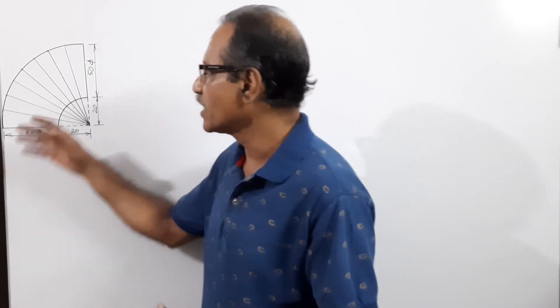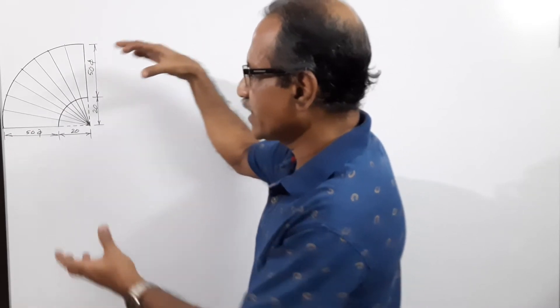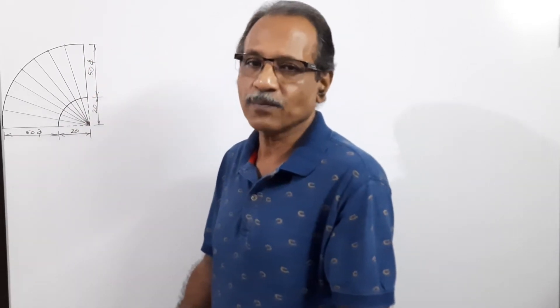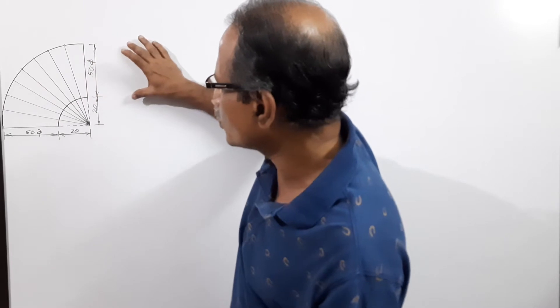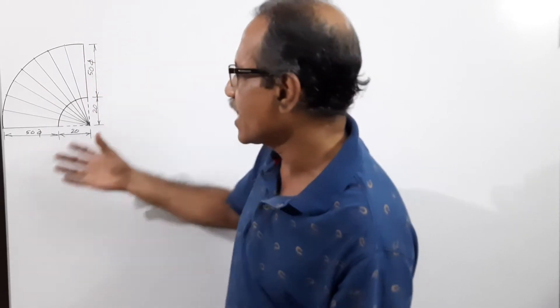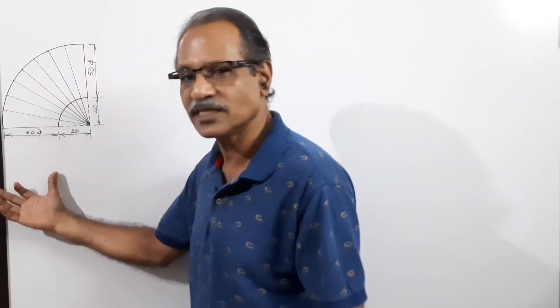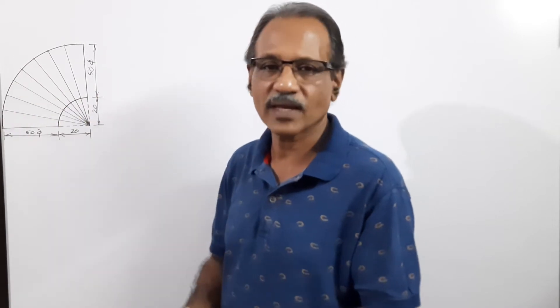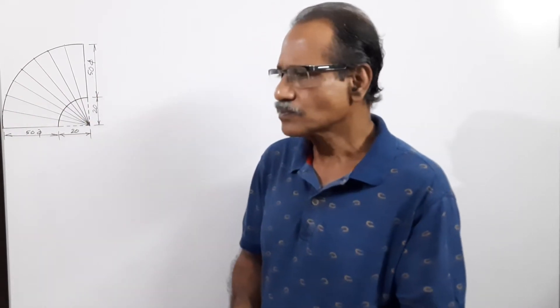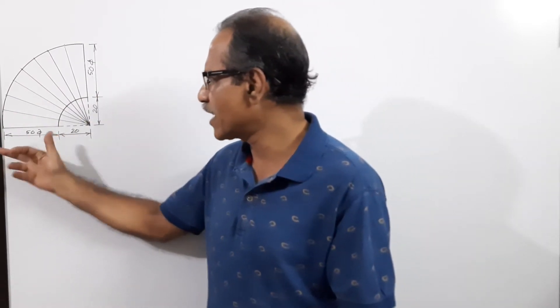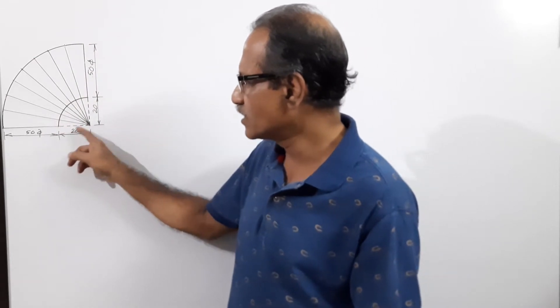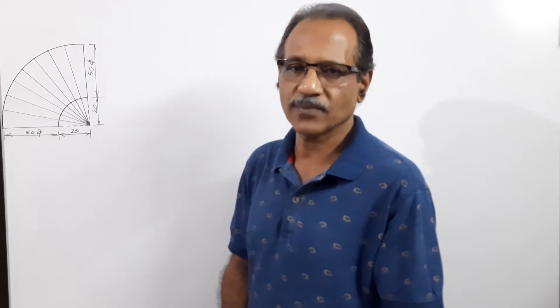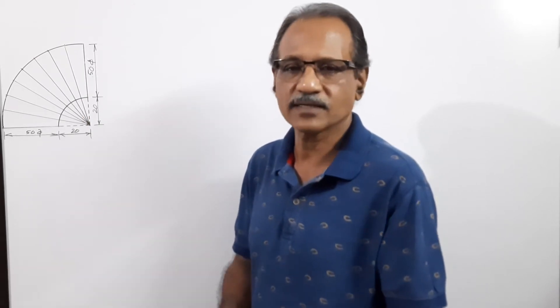In this pipe bend, there is a circular pipe coming here and a circular pipe coming here, connected with a pipe bend. The pipe bend has a circular extension on each side — the straight portions — but we are ignoring those and considering only the turning part. The dimensions are 50 mm diameter, with leg lengths of 20 mm on each side, all in millimeters.